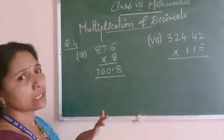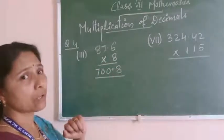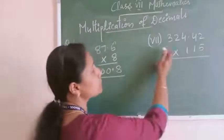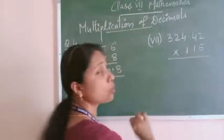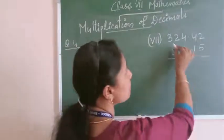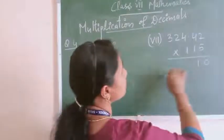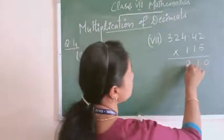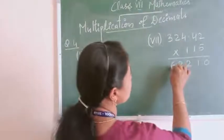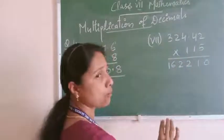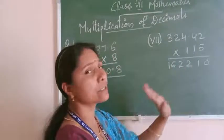Simple question only. The same simple multiplication you have to do. Without considering the point, first multiply the number, and after getting the answer you have to put the point. Now see the next question — question number 7: 324.42 multiplied by 150. A decimal number and a whole number are given, so this is a multiplication by a 3-digit number. First, we are multiplying this number by 5.